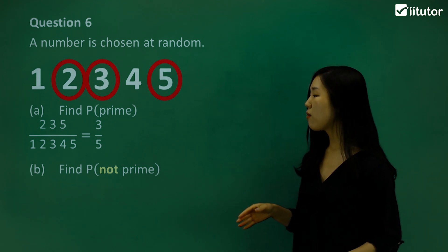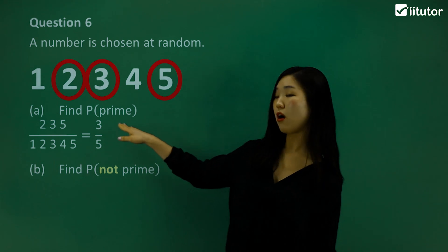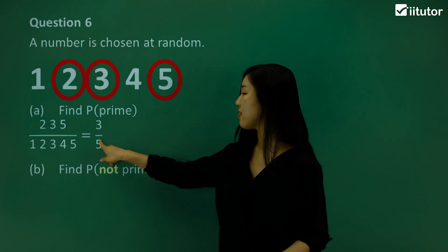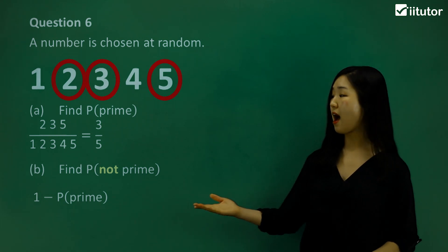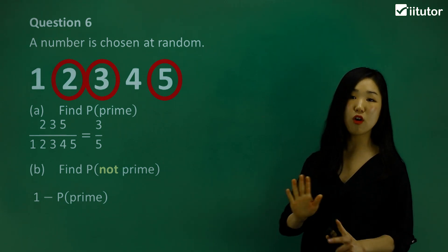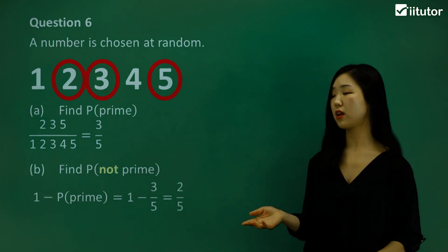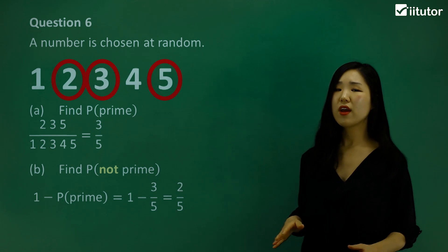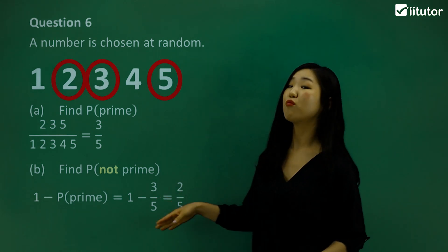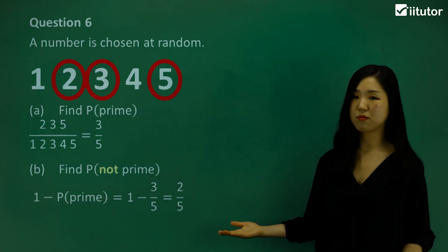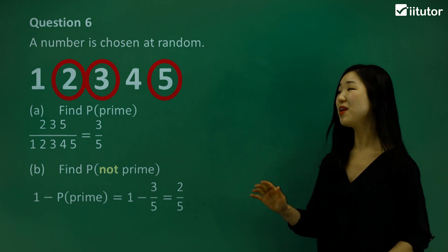Now let's find the probability of not a prime number, which is the complement of a prime number. We simply do 1 minus the probability of the prime number to get the probability of not a prime number. So it's 1 minus 3/5, which gives us 2/5. All I'm doing is subtracting away the probability of being prime, and then you get the probability of not being prime.